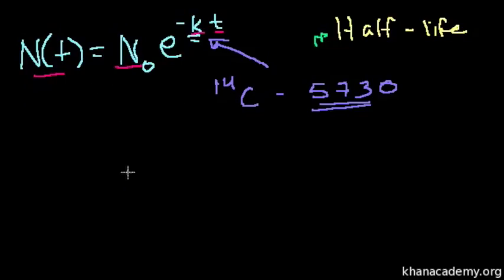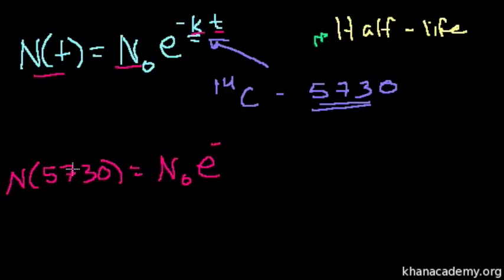So this tells us that after one half-life, so t is equal to 5,730, N of 5,730 is equal to the amount we start off with. So we're starting off with N sub 0 times e to the minus, wherever you see the t, you put the minus 5,730. So minus k times 5,730. That's how many years have gone by. And half-life tells us that after 5,730 years, we'll have half of our initial sample left.